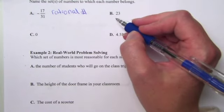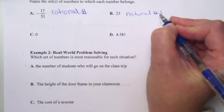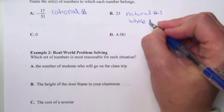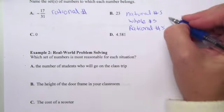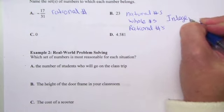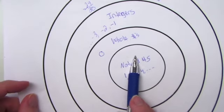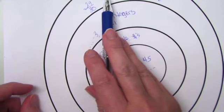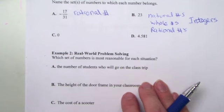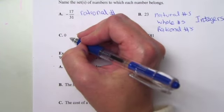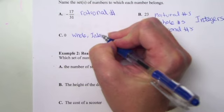Letter B — if you look at that, that's in your natural numbers, but it's also in your whole numbers, your integers, and your rational numbers. It belongs to all four sets because it's in the innermost circle. Since it's in the innermost circle, it's included in all of those above it. Now we have the number zero. Zero is not a natural number because natural numbers start at 1, but it is a whole number, it is an integer, and it is rational.